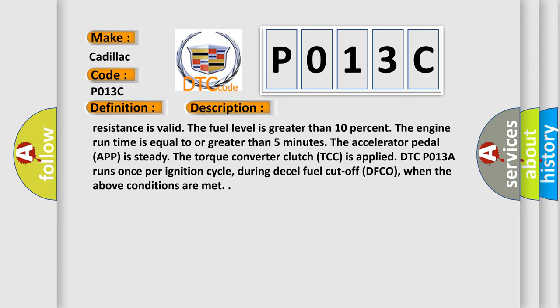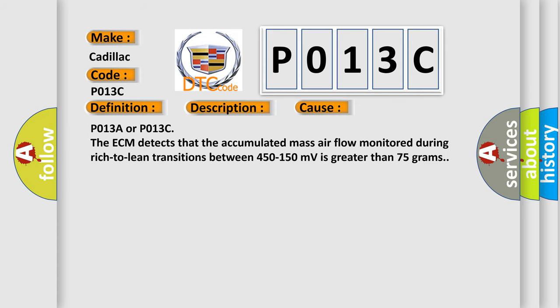When the above conditions are met, this diagnostic error occurs most often in these cases: P013A or P013C. The ECM detects that the accumulated mass airflow monitor during rich-to-lean transitions between 450 to 150 millivolts is greater than 75 grams.